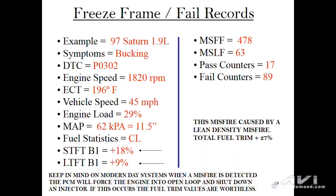On the flip side, let's say a vehicle comes in with the MIL light on and a misfire code — in this case a 1997 Saturn with a P0300. Take a look at the short-term and long-term fuel trim. When you combine both together, the total fuel trim is adding 27 percent. That tells you right away it is a lean density misfire, and all the secondary components in the world are not going to correct that problem.